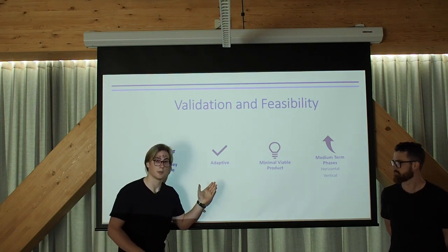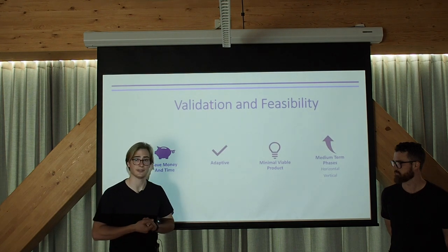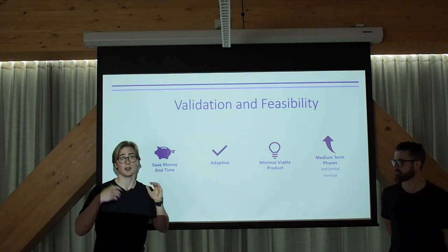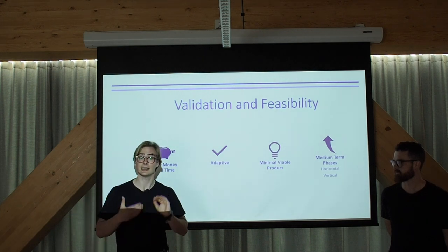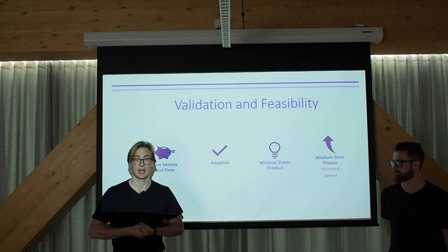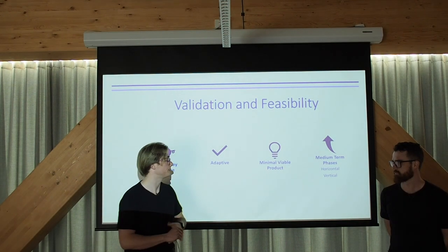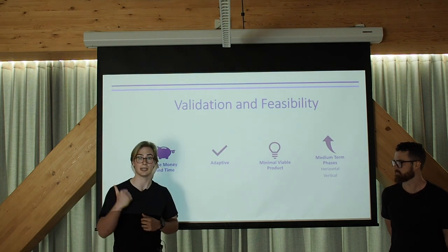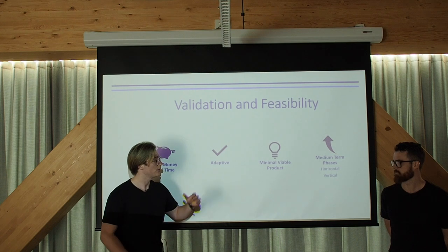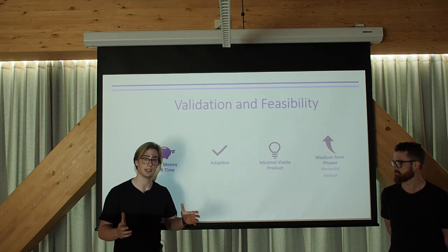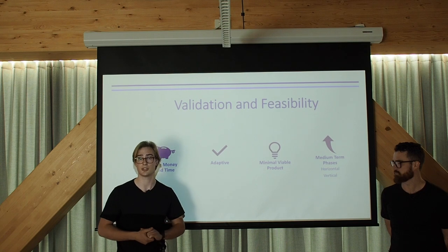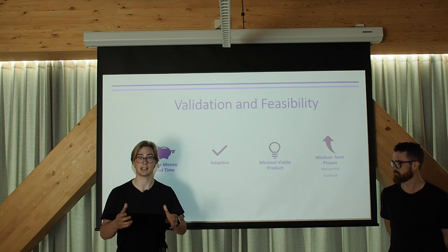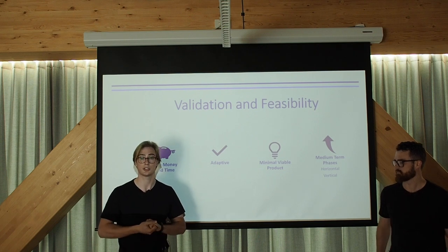This form is adaptive because it can change to the requirements of any form, and scalable to any organisation. For example, this could go to any Legal Aid Commission, Community Legal Centre, and any law firm. Our minimum viable product is online, interactive, and integrates with Legal Aid ACT's existing systems. The medium-term phases horizontally would be the addition of more languages to increase comprehension, like Arabic and Hindi. Vertically, what we'd do is help the assessor make their decision whether there should be a Legal Aid grant.